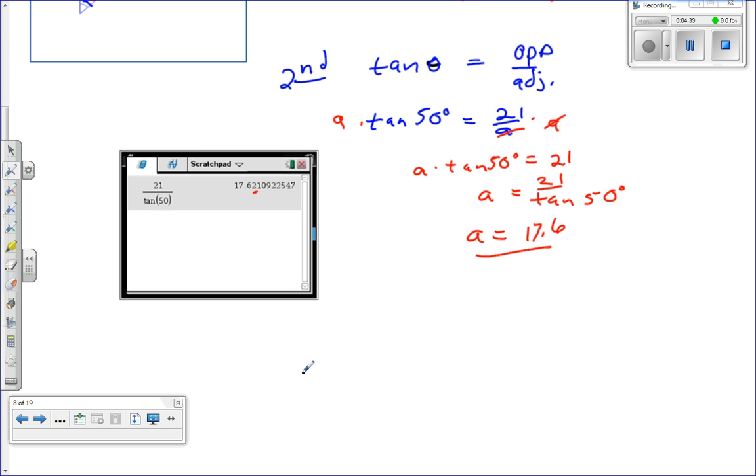So the third piece to this problem, let's go sine of theta is equal to opposite over hypotenuse. And we know that sine of the angle we're going to use is 50 degrees, is equal to opposite over hypotenuse. So that's going to be 21 over C.